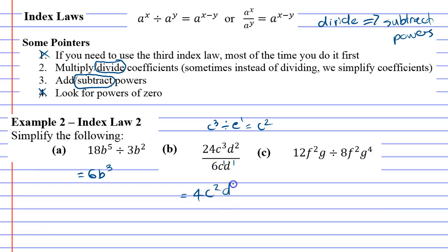And d to the power of 2 divide d to the power of 1 would be d to the power of 1. 2 minus 1 is 1. Remembering that when we write our solution, we never put a power of 1 down.